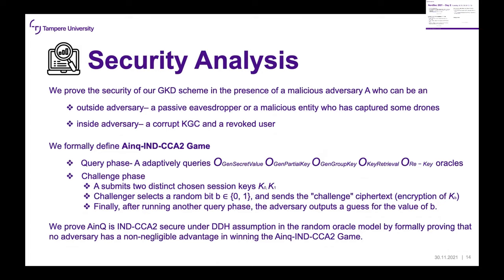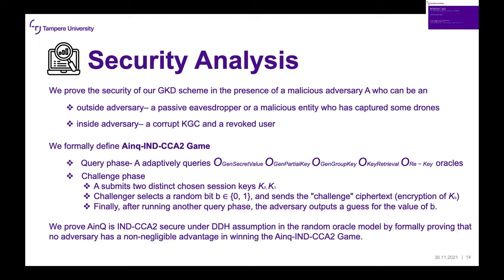We provide a formal security analysis of our scheme. We consider two adversaries: an outside adversary — a passive eavesdropper or malicious entity who has captured one of the drones — and an inside adversary, which is a corrupt KGC or a revoked user. We formally define the AI&Q IND-CCA2 game, which has five oracles: generate CPU value, generate partial key, generate group key, key retriever, and re-key. In the challenge phase, the adversary submits two distinct chosen session keys K0 and K1; the challenger selects a random bit B and sends the challenge ciphertext; and after another query phase, the adversary outputs a guess for B. Our scheme is secure under the DDH assumption in the random oracle model if no adversary has a non-negligible advantage in winning the game.